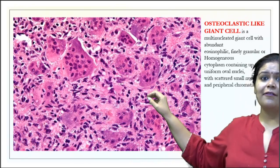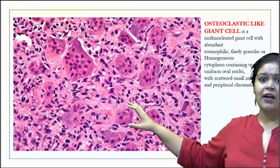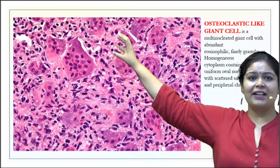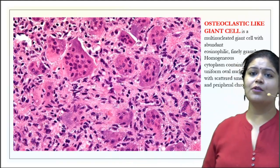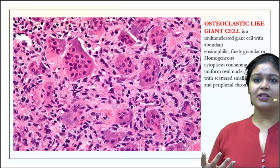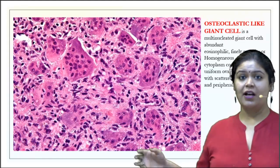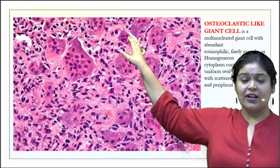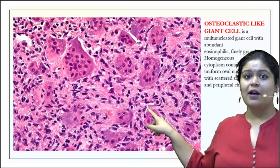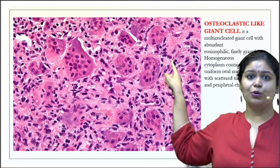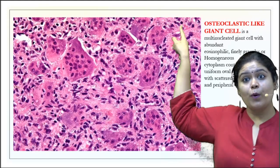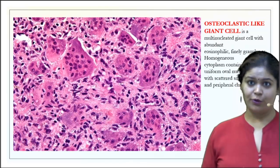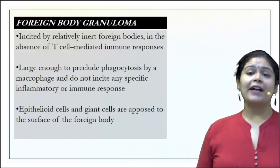Another type you encounter in orthopedics is multinucleated osteoclast-type giant cells. These have abundant eosinophilic cytoplasm with around a hundred nuclei that are nicely clumped together with peripheral chromatin. In an osteoclastoma photograph, you can see the osteoclast-like giant cells are not the tumor cells — the tiny mononuclear cells in the background stroma are the actual tumor cells. This is also called giant cell tumor of the bone.